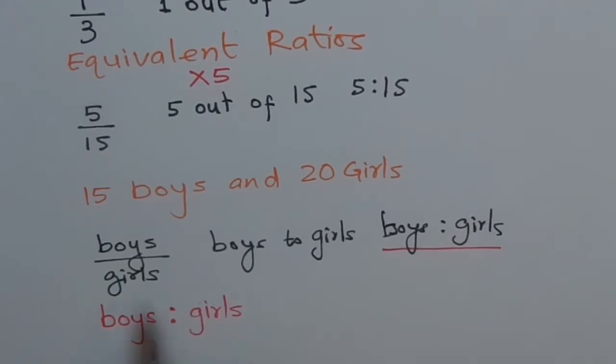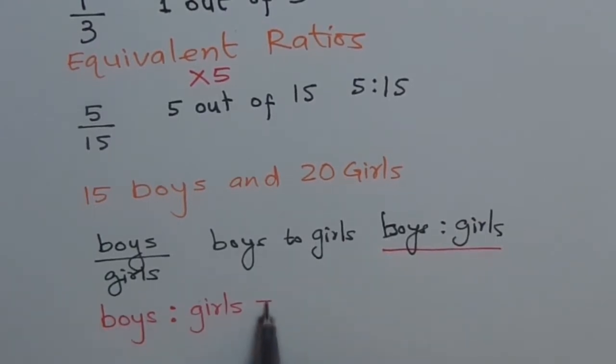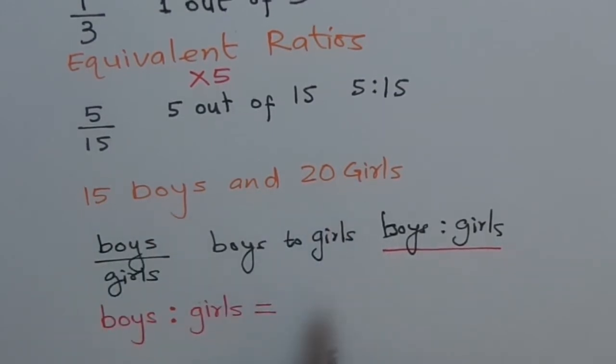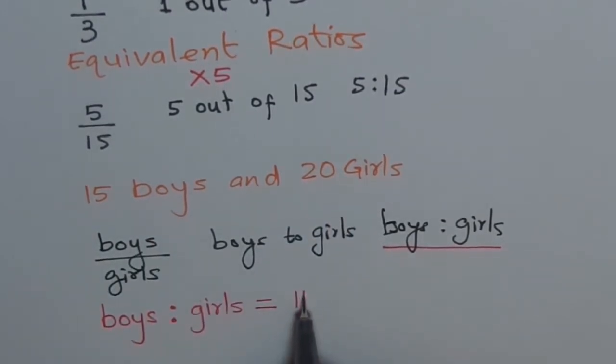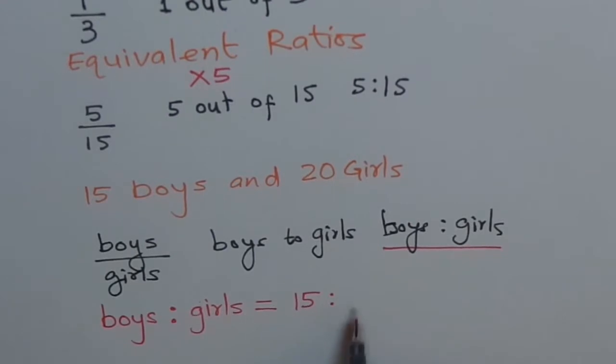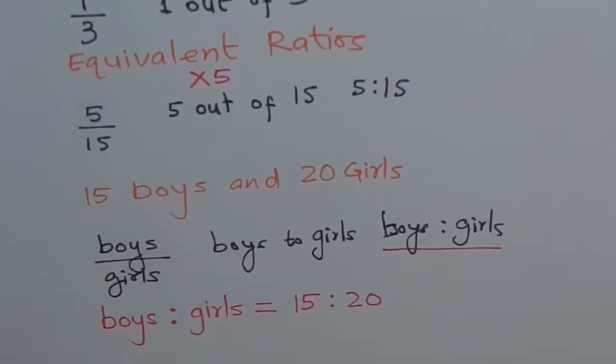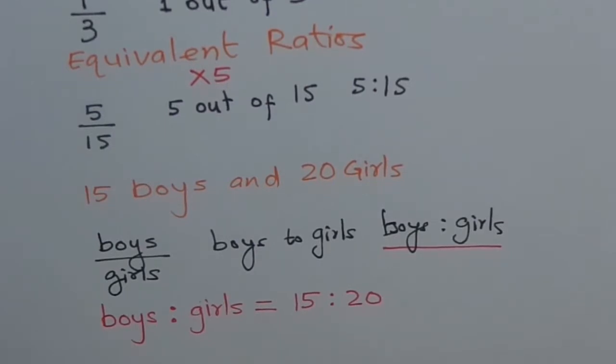This is the way to write ratio. And in our example, what is this equal to? This is equal to 15 boys and 20 girls. So I can write this ratio as 15 is to 20. Do you understand? So this is the way to write ratios. 15 to 20.